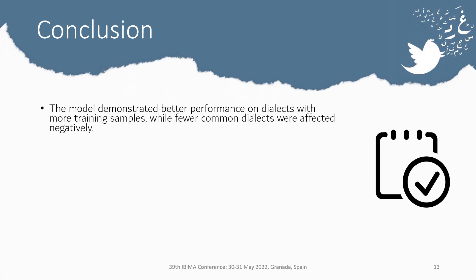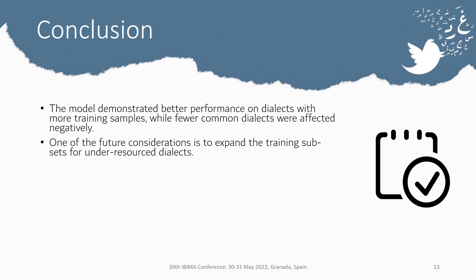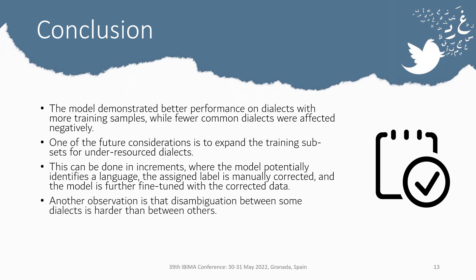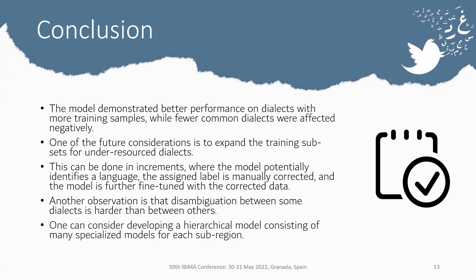The model demonstrated better performance on dialects with more training samples, while less common dialects were affected negatively. One future consideration is to expand training subsets for under-resourced dialects in increments, where the model identifies a language, the assigned label is manually corrected, and the model is further fine-tuned with the corrected data. Another observation is that disambiguation between some dialects is harder than others; one can consider developing a hierarchical model consisting of many specialized models for each sub-region.